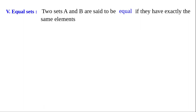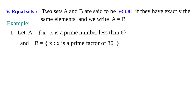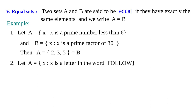Type 5: equal sets — two sets A and B are said to be equal if they have exactly the same elements, and we write A = B. Example: A equals the set of all x such that x is a prime number less than 6, so A = {2, 3, 5}. B equals the set of all x such that x is a prime factor of 30. Since 30 = 2 × 3 × 5, B = {2, 3, 5}. Hence A = B.